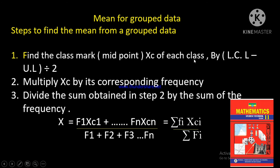Steps to find the mean from grouped data. First, find the class mark, which is also called the midpoint. If you have a class mark, it is different for each class interval. The midpoint is calculated as: lower class limit plus upper class limit, divided by two.